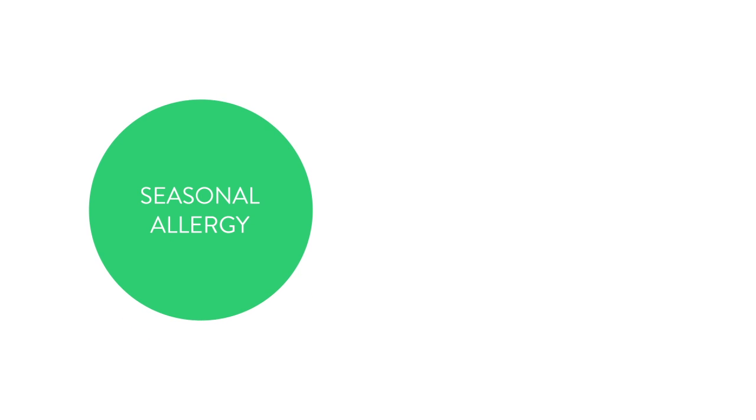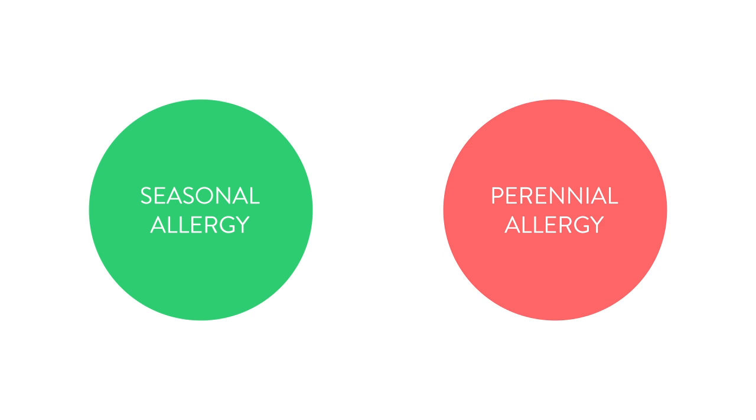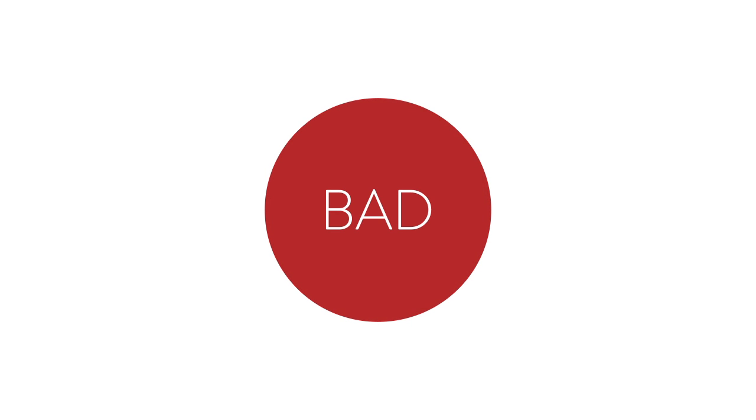This explains why we get seasonal and perennial or year-round allergies depending on when the allergen is in our environment. Now in our environment anything that is outside of you is technically foreign. Your body's immune system needs to distinguish which of these foreign things are harmful to you versus something that could be left alone.